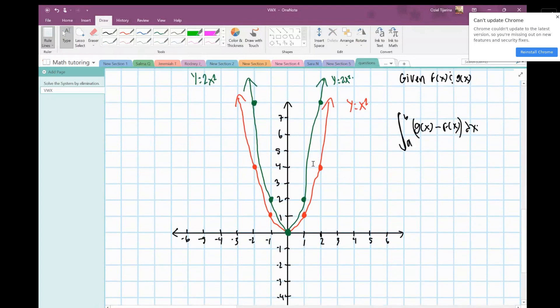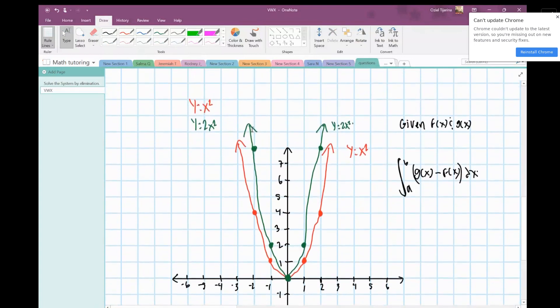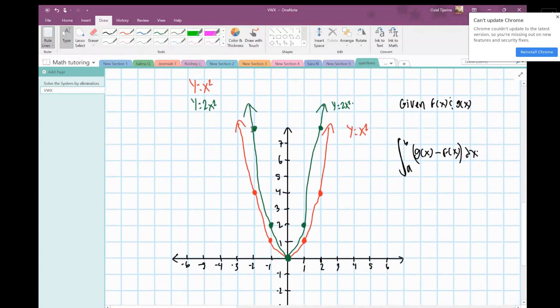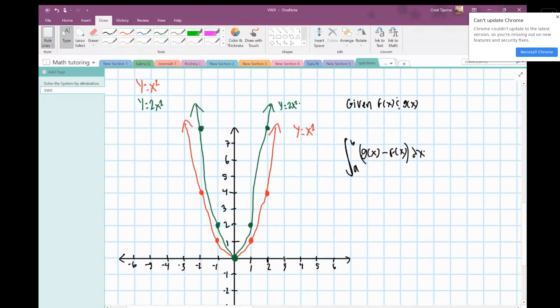With these two functions, it's from zero to zero, which is basically zero. There's no area that is enclosed with those two functions, so that's why it would be zero.